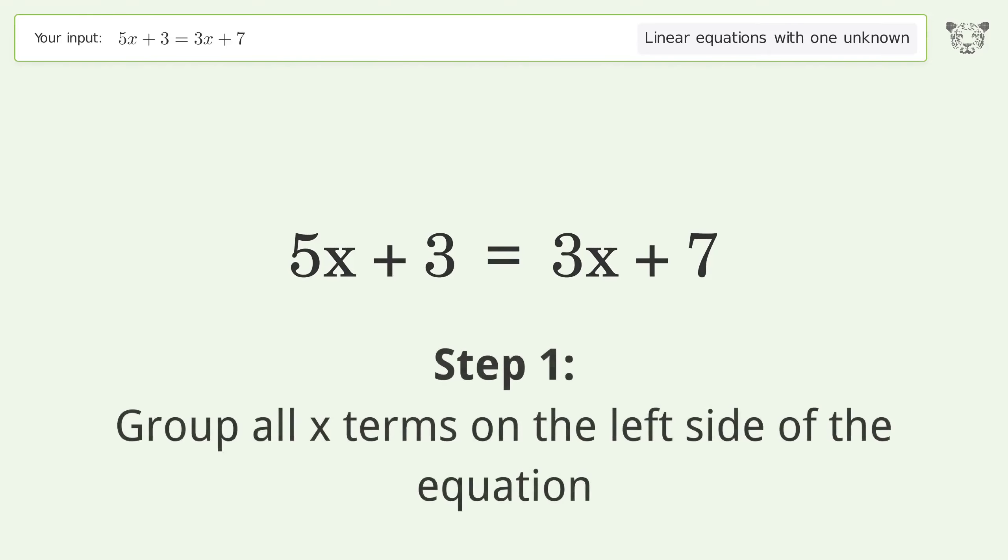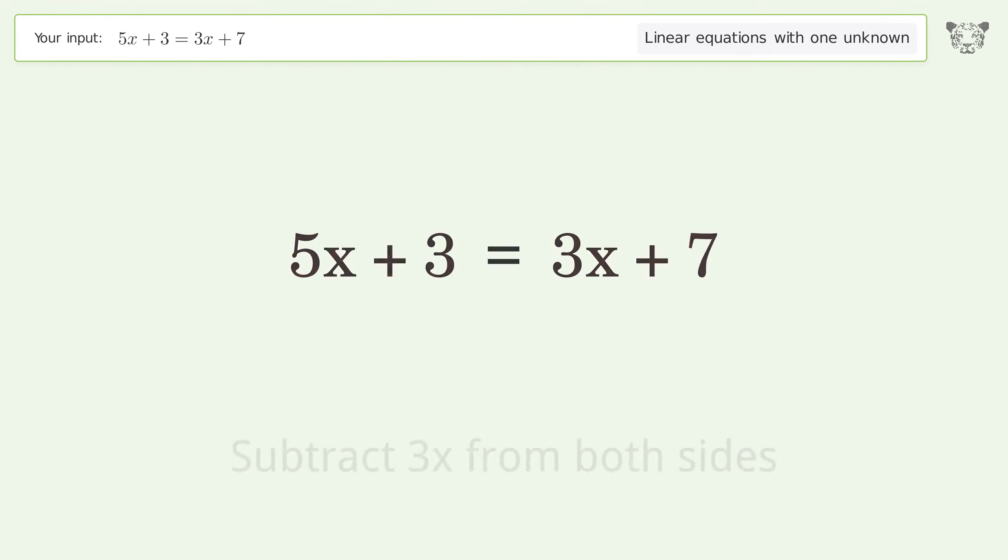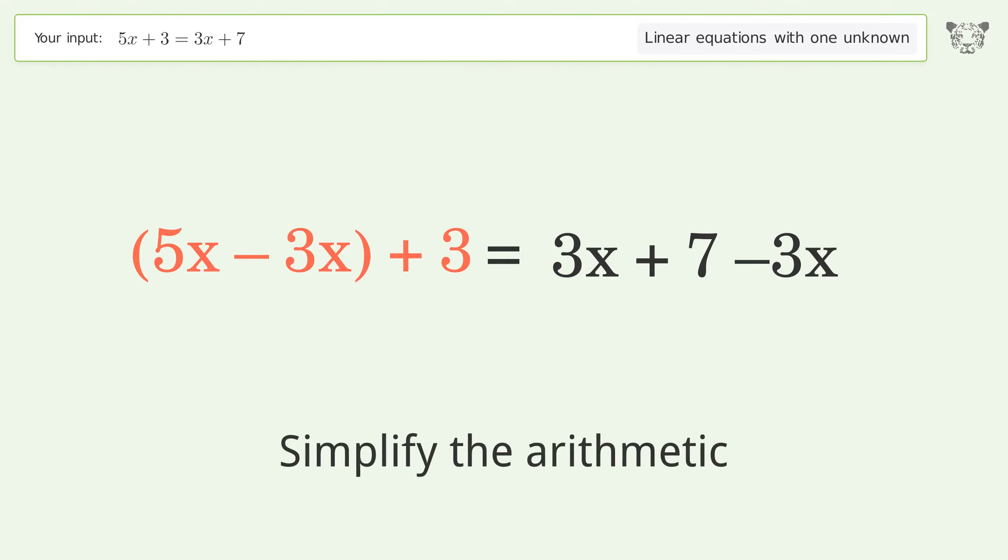Group all x terms on the left side of the equation. Subtract 3x from both sides. Group like terms and simplify the arithmetic.